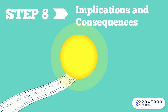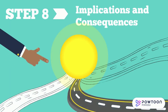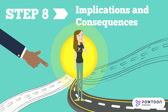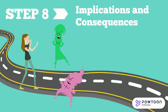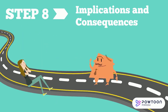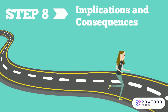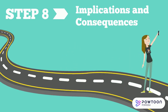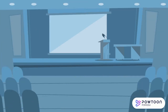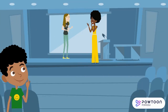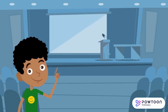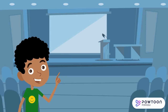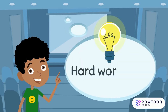When we argue to support a certain point of view, we must consider the possible results of following that path. The ability to reason well is measured in part by the ability to understand and identify the implications and consequences of the reasoning.